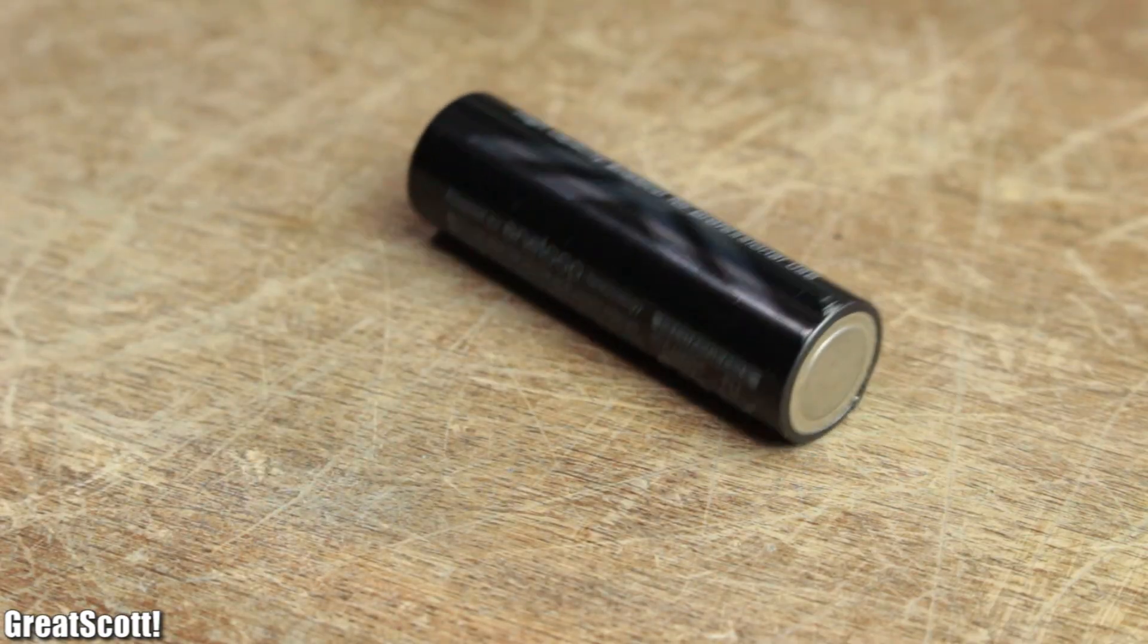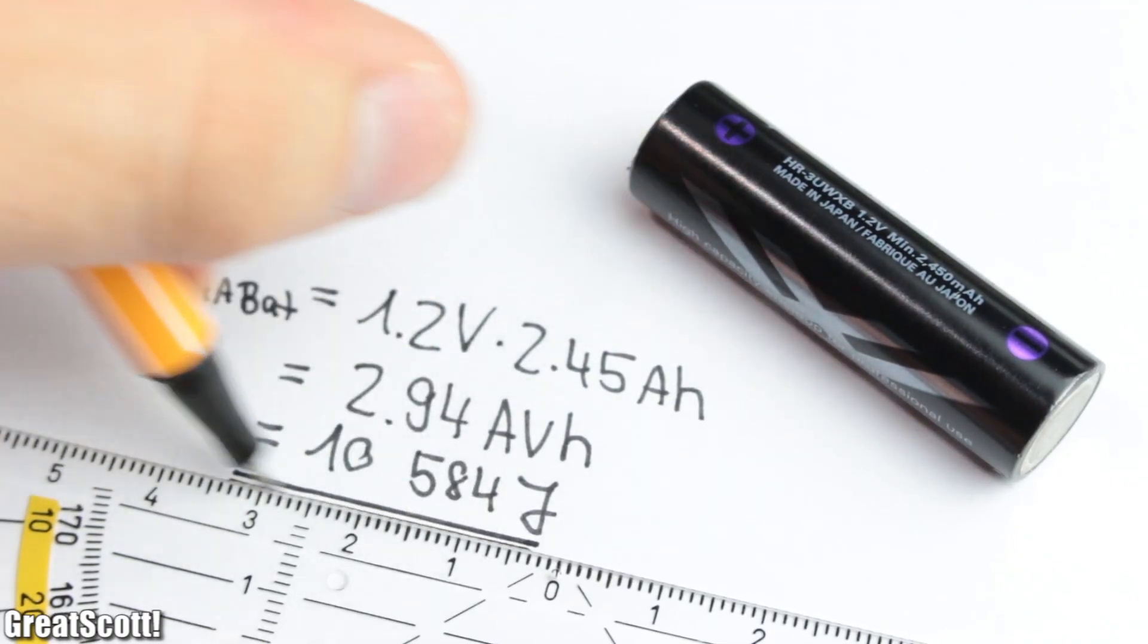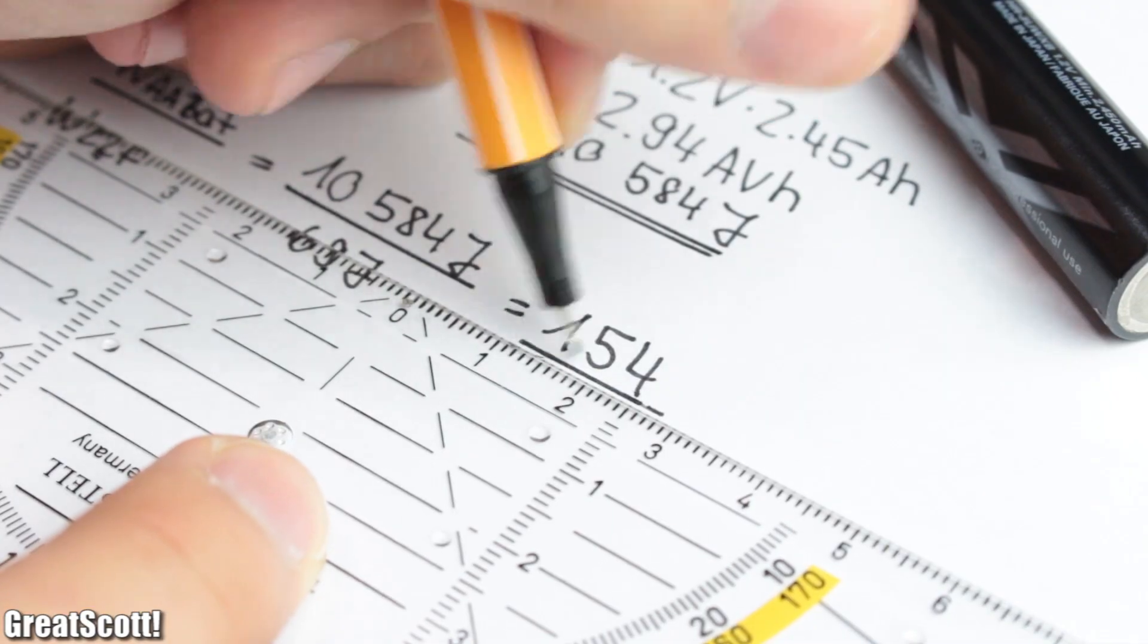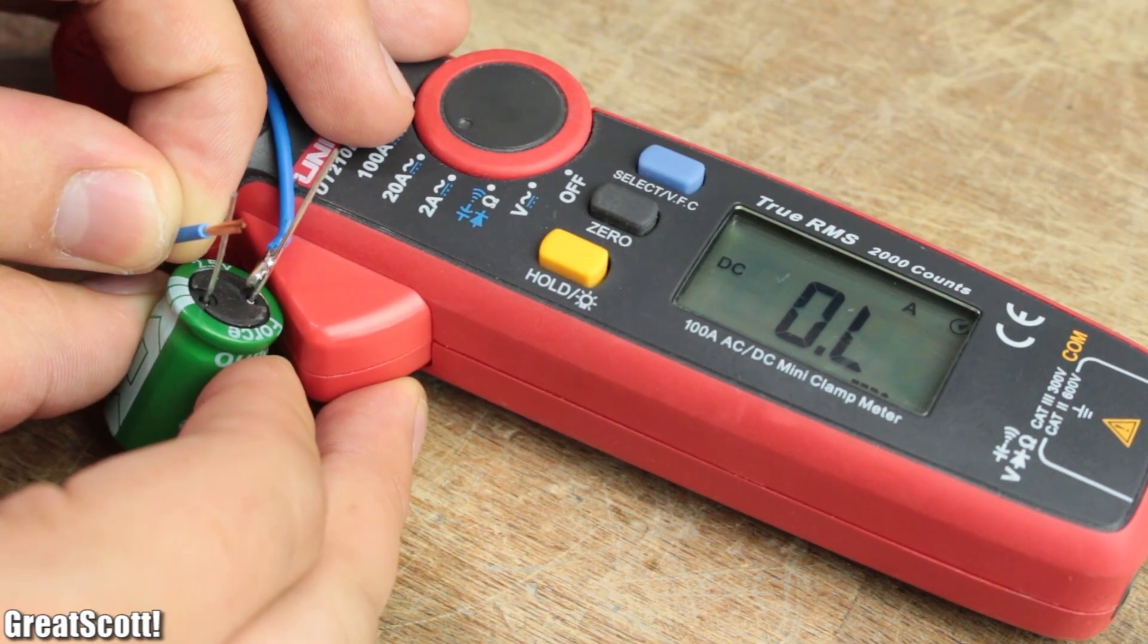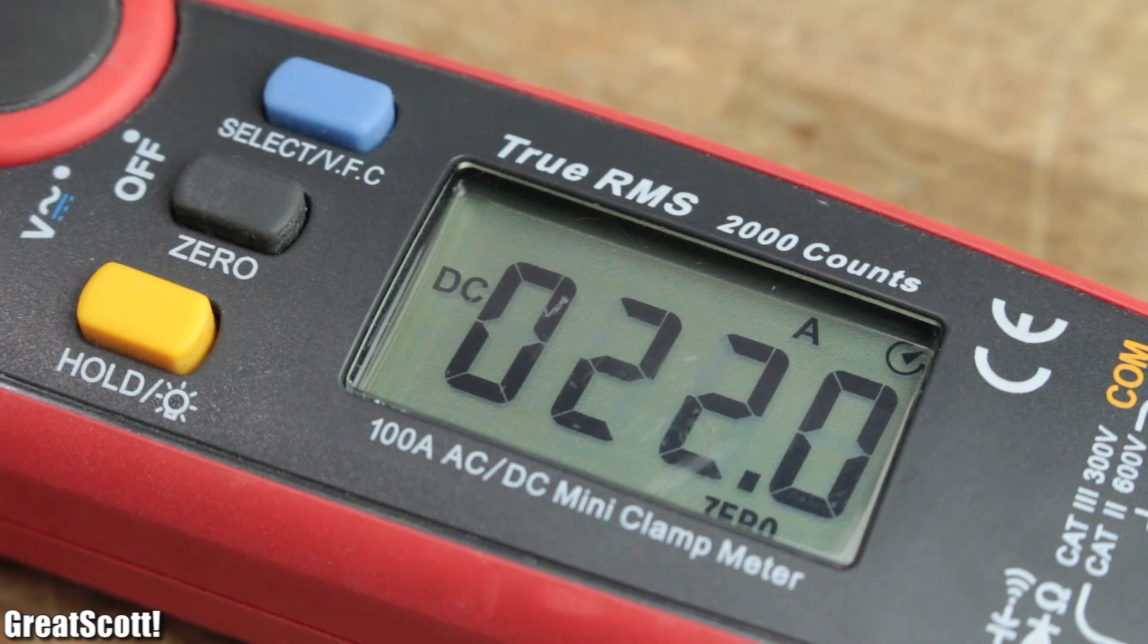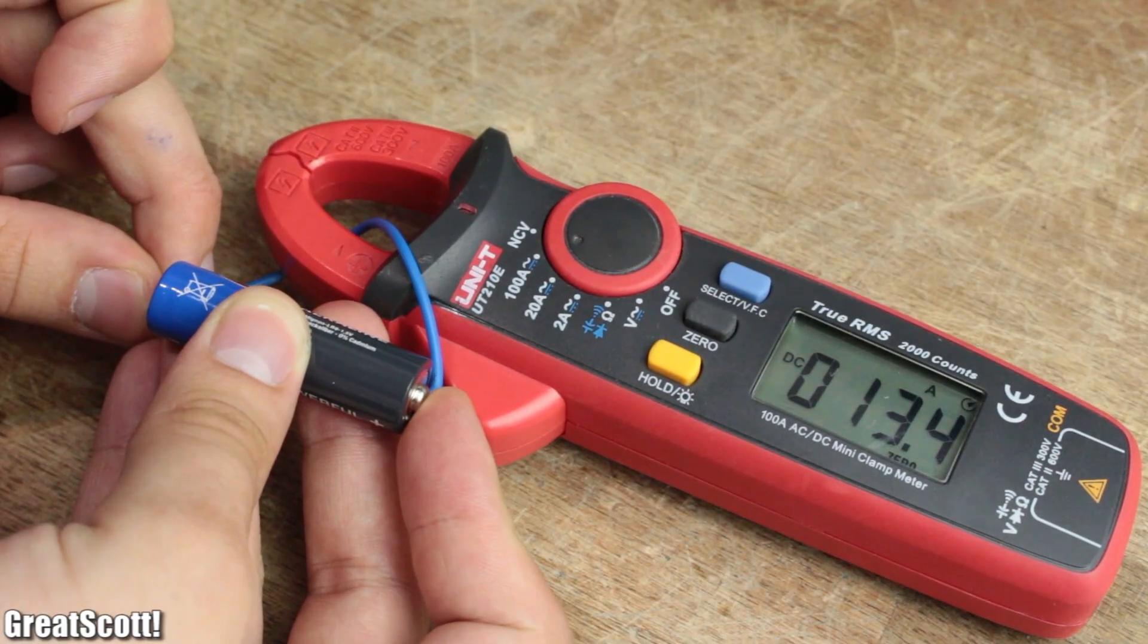Of course my Eneloop AA battery still can hold up to 150 times more energy than my supercap. But on the other hand, due to its lower internal resistance, the supercap can supply more current than your common AA battery.